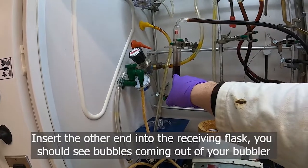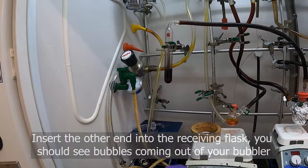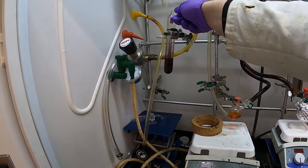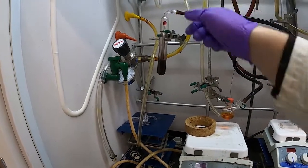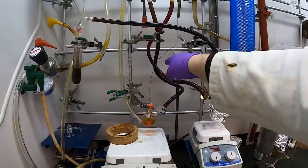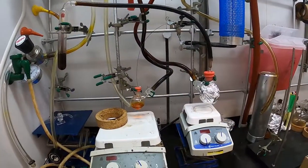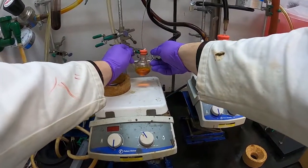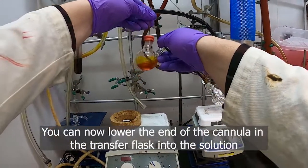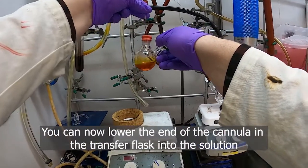We can see we're pushing nitrogen through because we're getting bubbles on our bubbler here. We're getting nitrogen through our flask, through the septum, through the cannula and into here and out of our bubbler. The next step will be to push our needle into our solution.